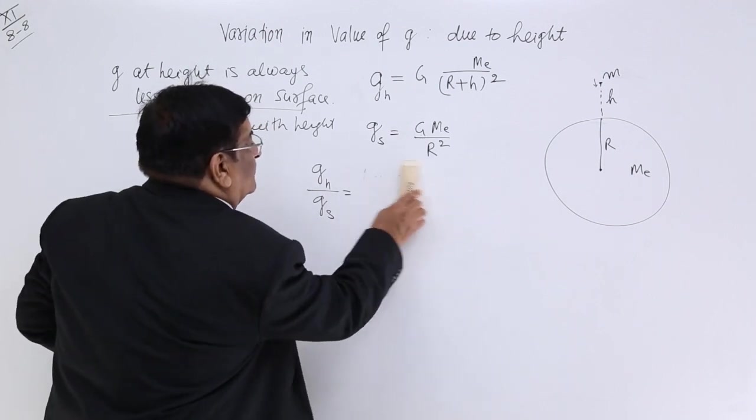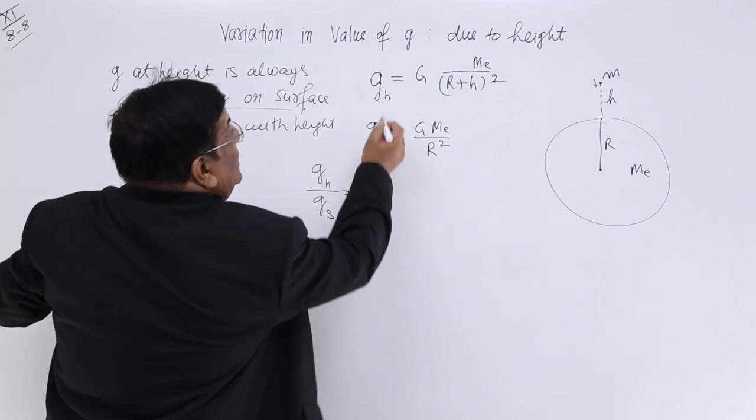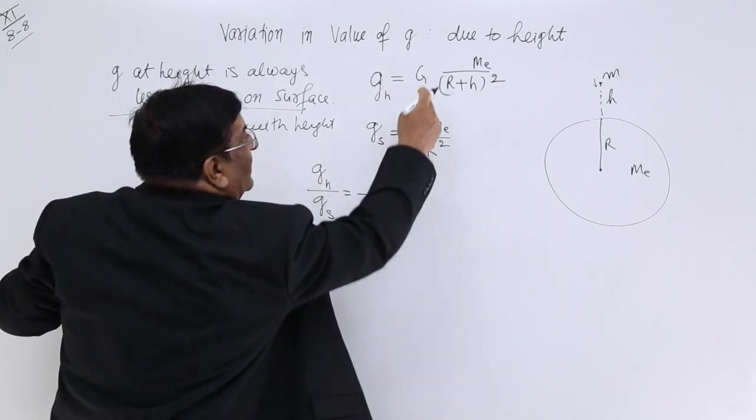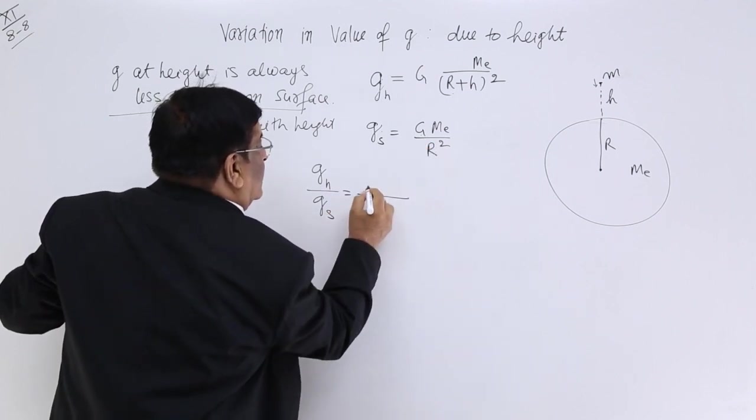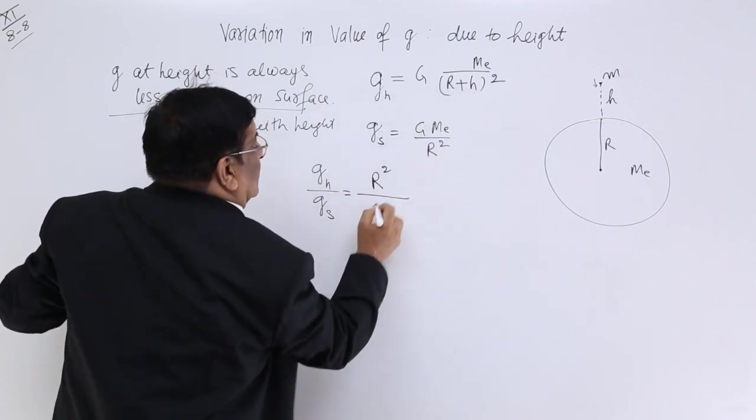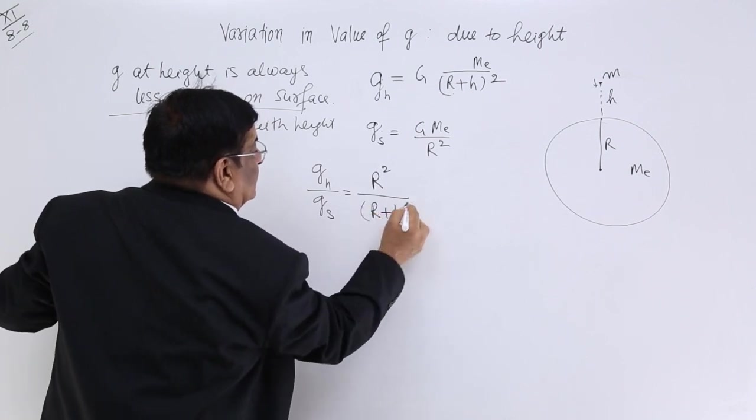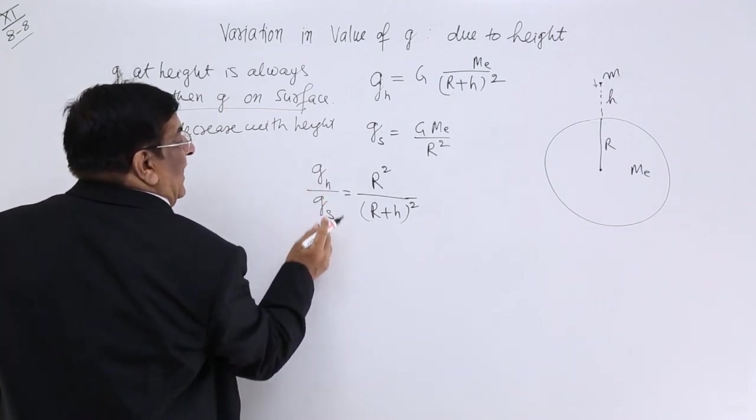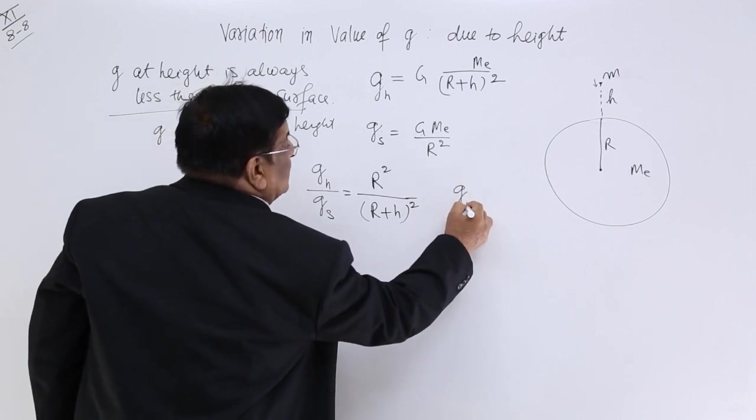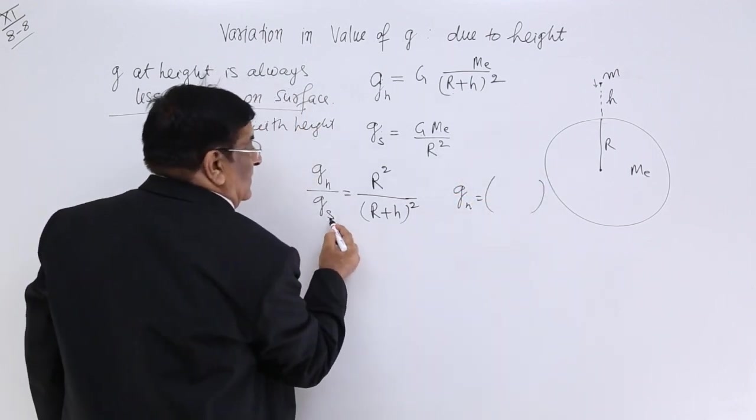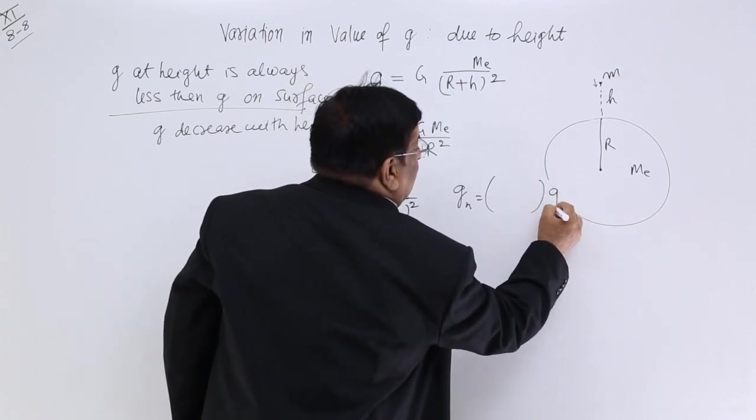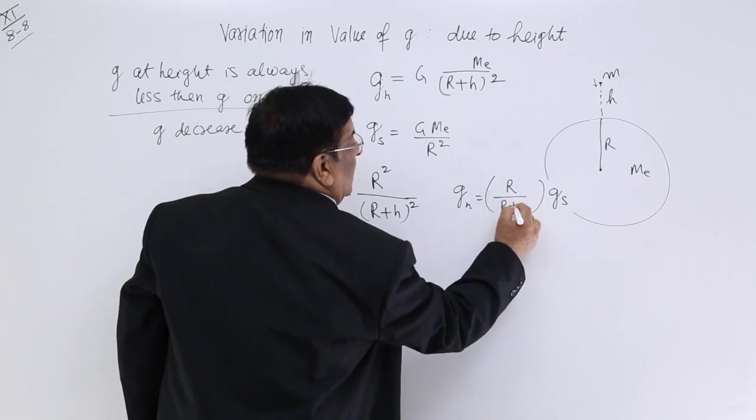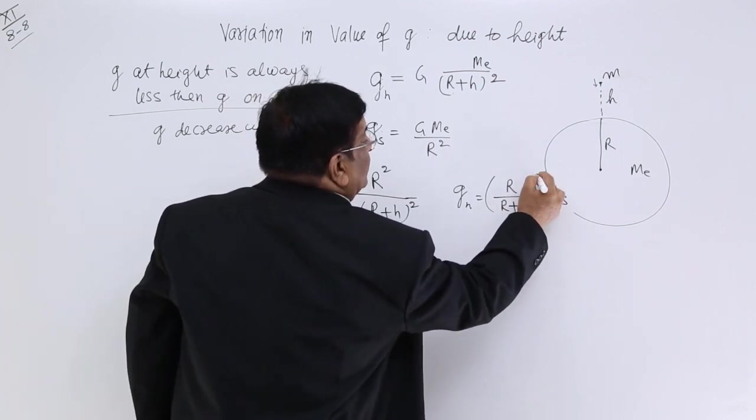No, let me correct it. They are inverse. So G_h upon G_s. When you divide the two, then R will go up and R plus H will come down. So acceleration at height is equal to acceleration at the surface multiplied with R upon R plus H square.